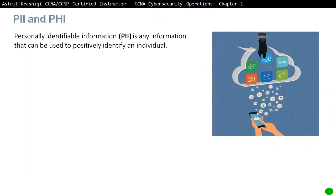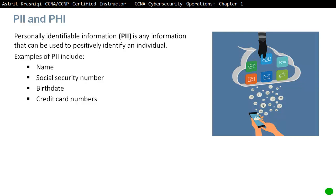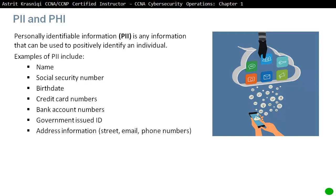PII and PHI. PII — Personally Identifiable Information — is any information that can be used to positively identify an individual. Examples include your name and your social security number, or national insurance number here in the UK.